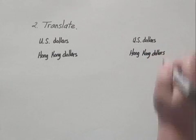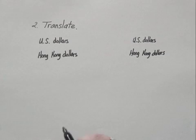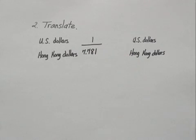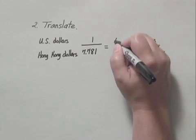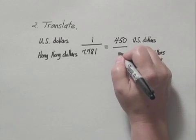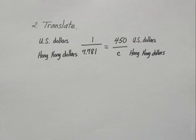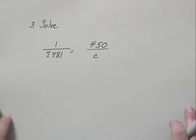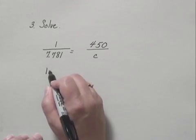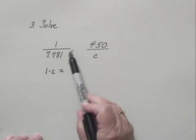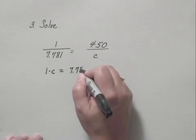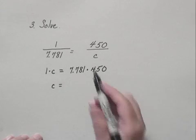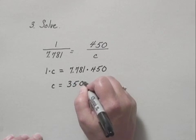If we can keep that straight, the rest is more straightforward. We're given that the ratio of U.S. dollars to Hong Kong dollars is 1 U.S. dollar to 7.781 Hong Kong dollars. So we should have the same ratio for 450 U.S. dollars to C Hong Kong dollars. We've translated to a proportion, and now we solve it by equating cross products: 1 times C equals 7.781 times 450. So C equals 3,501.45.